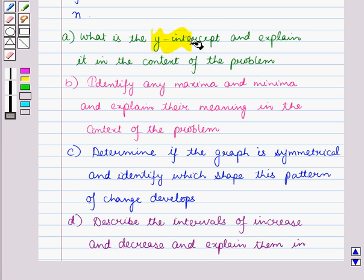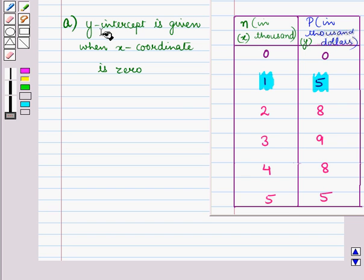Now, in the first part, we have to find the y-intercept and we have to explain it in the context of the problem. Now, y-intercept is given when x-coordinate is 0. And here, variable x is given by N and variable y is given by P.